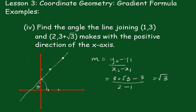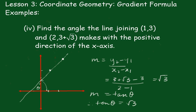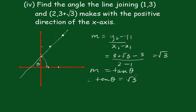That gives me √3. And we know the other formula m equals the tan of θ. Therefore the tan of θ must be equal to √3. Now either using the calculator or knowing the fact that the inverse tan of √3 is equal to 60 degrees. So this angle here is 60 degrees.